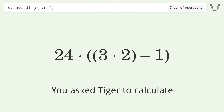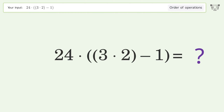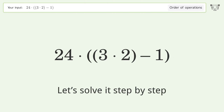You asked Tiger to calculate this. It deals with the order of operations. The final result is 120 — let's solve it step by step.